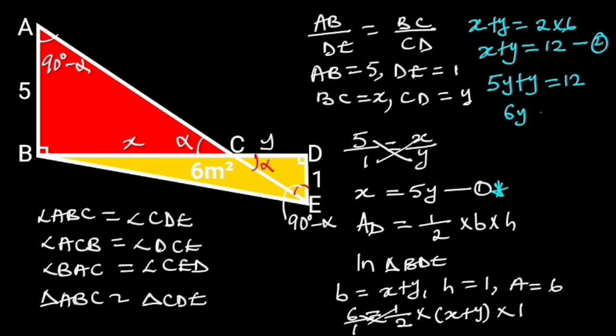So, 6Y is equal to 12. To find Y, we divide both sides by 6. 6 will cancel out 6, and 12 divided by 6 is equal to 2. So, Y is equal to 2.